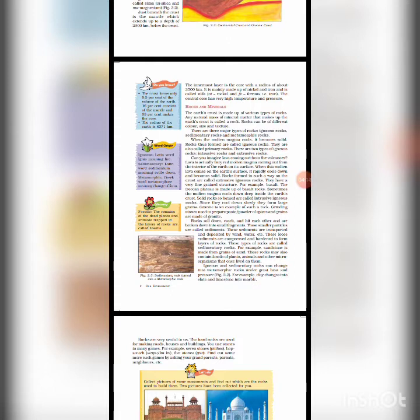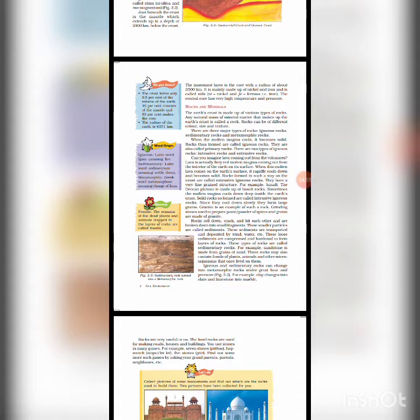Igneous rocks. When the molten magma cools, it becomes solid and these are called igneous rocks. They are also called primary rocks. There are two types of igneous rocks: extrusive rocks and intrusive rocks. When the molten lava comes on the earth's surface, it rapidly cools down and becomes solid on the crust. These rocks are called extrusive igneous rocks. They have a very fine grained structure. For example, basalt — the Deccan Plateau is made up of basalt rocks.